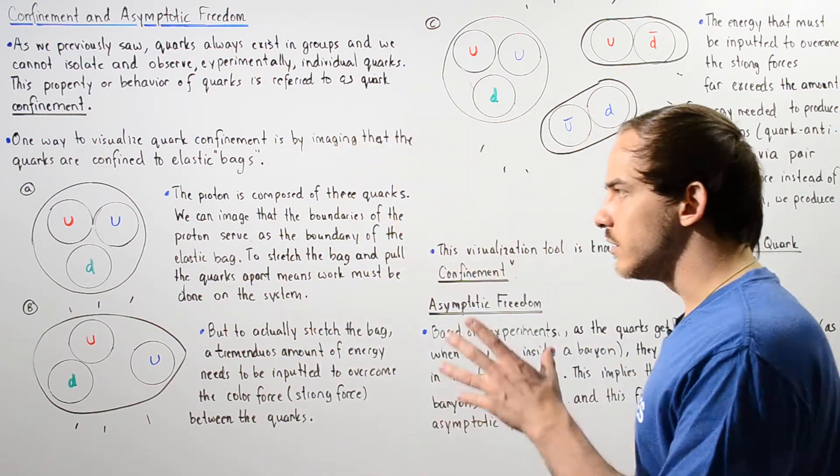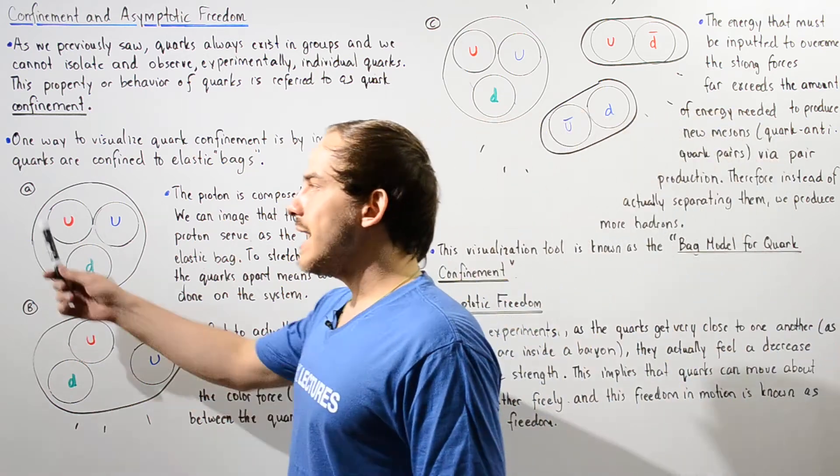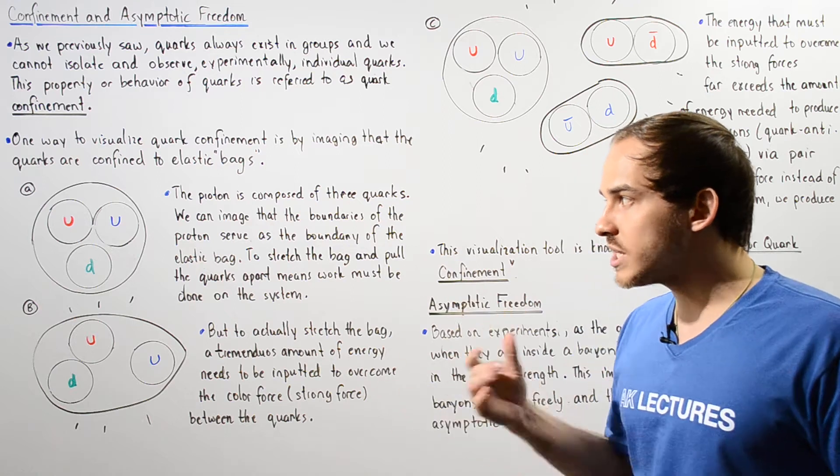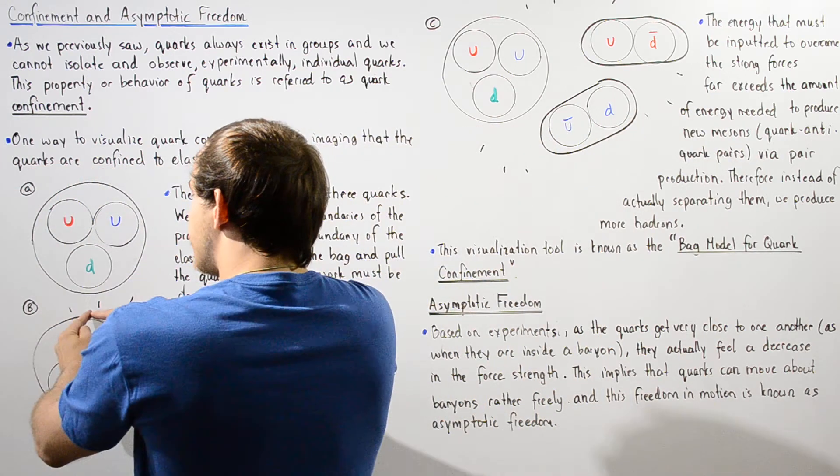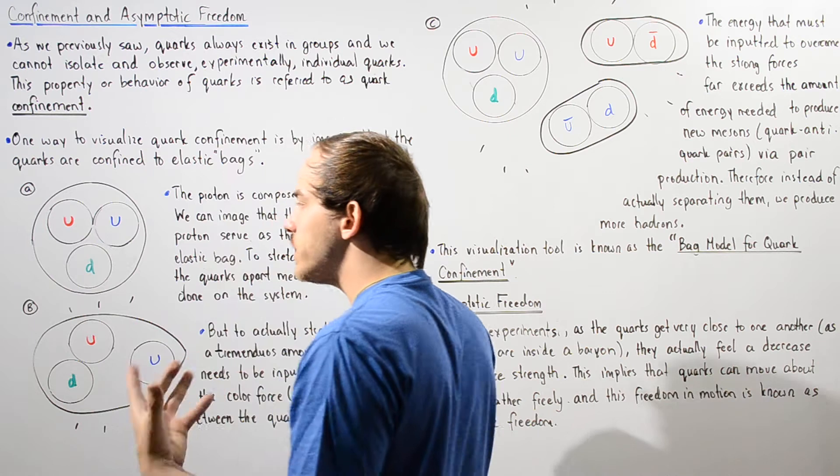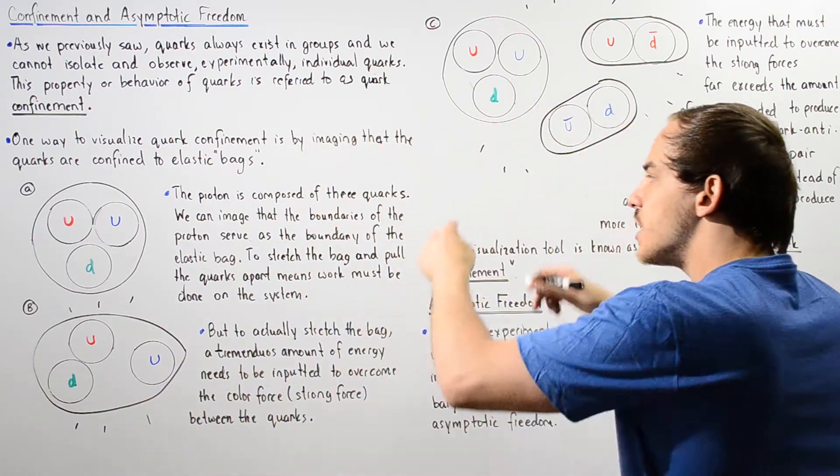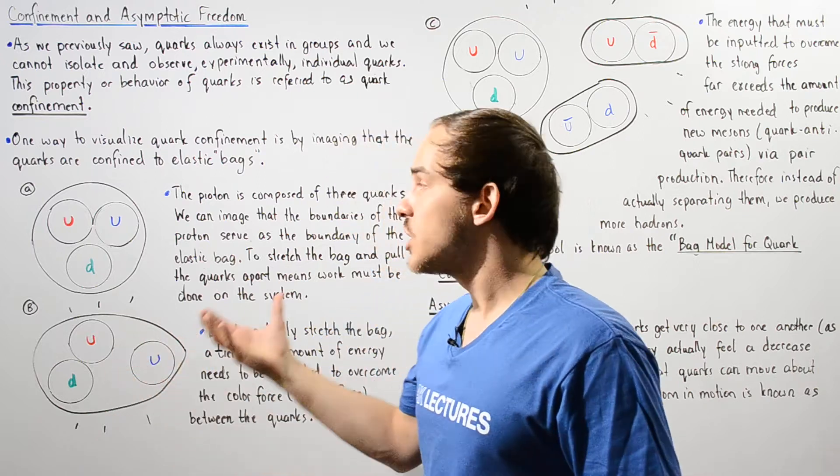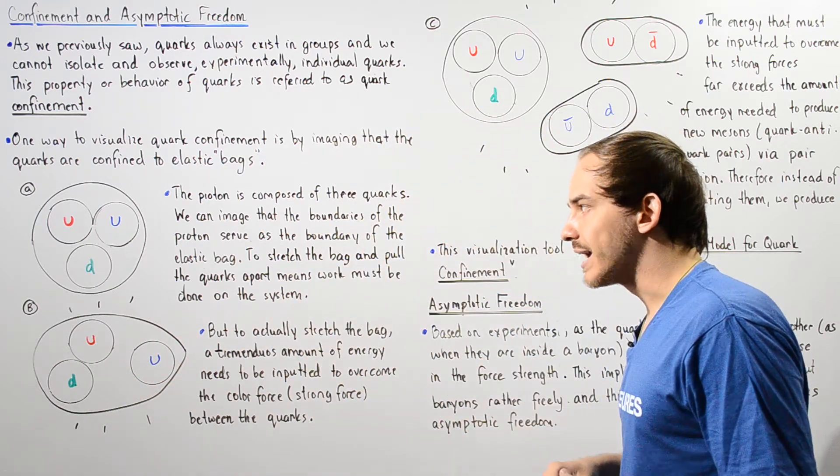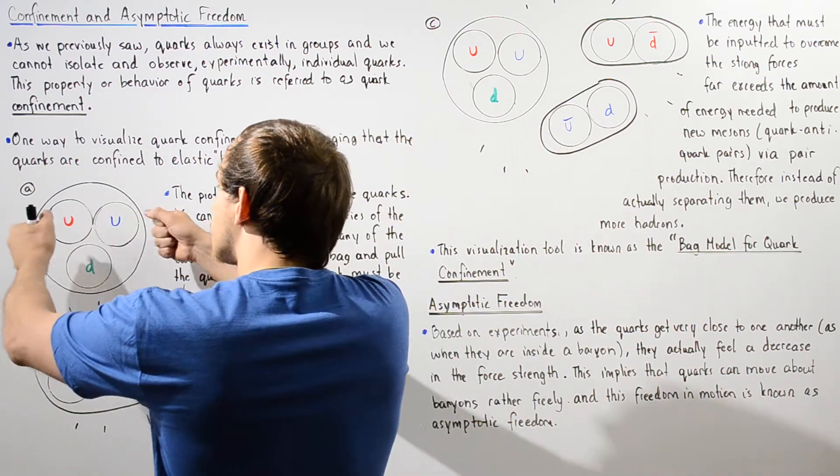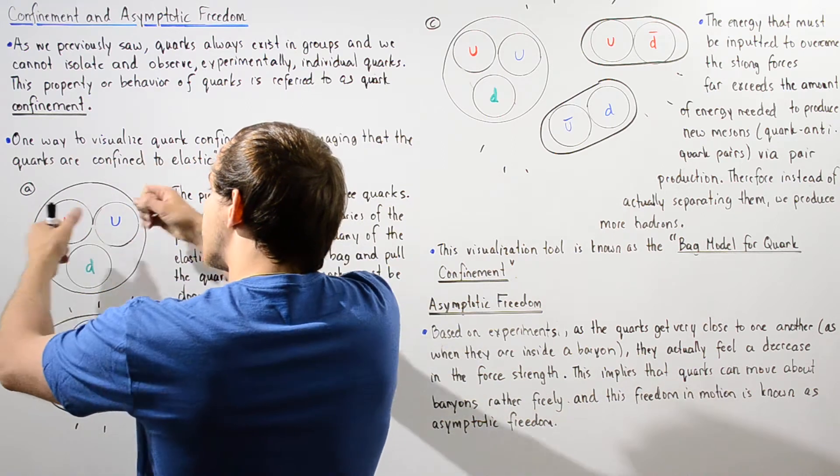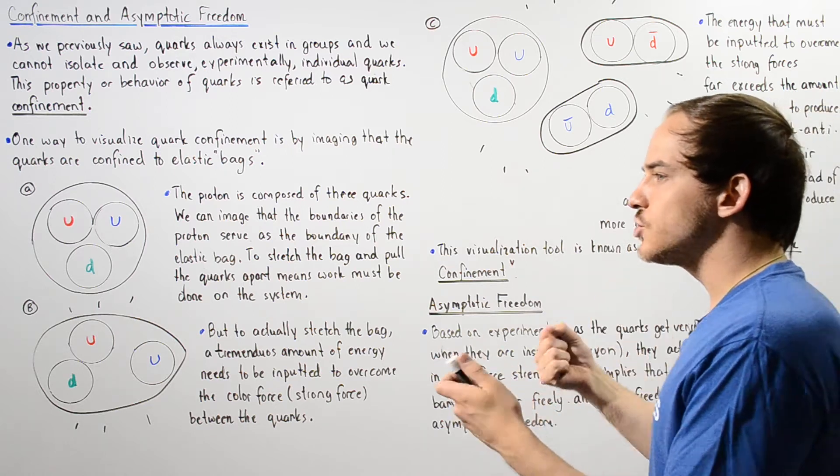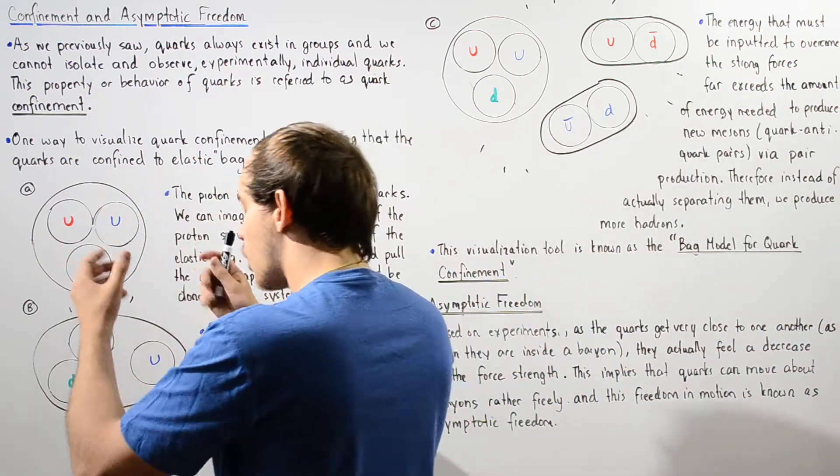Let's take a look at diagram A. In diagram A, we have one type of baryon, the proton. The proton is shown by this outer circle, and we can imagine that the outer boundaries of our proton serve as this elastic bag. To actually stretch the elastic bag to separate the individual quarks, we have to input a certain amount of work into our system, our proton.